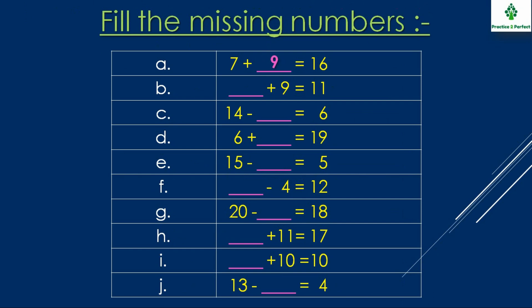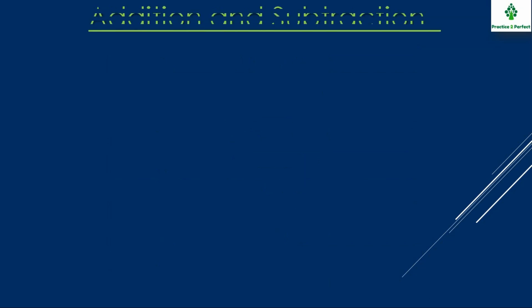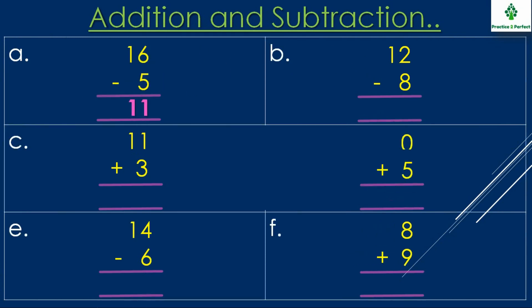In this question you have to fill the missing number to get the result that is given on the right side. The first example is already done for you. This is the simple vertical addition and subtraction problem. Kids can solve this mentally or they can use any method that they want to.